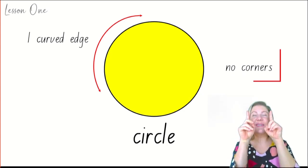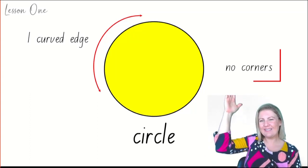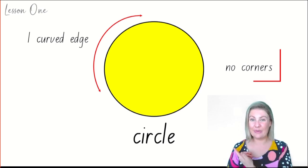Think of your elbow. It's sort of like a corner. You can make your own corner with your body. Well, a circle has no corners.